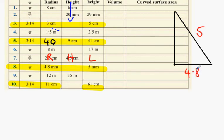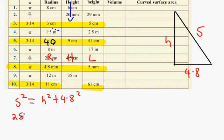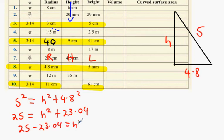Everybody keeps getting Pythagoras's theorem mixed up — it changes with every question. The longest side gets squared: 5 squared equals h squared plus 4.8 squared. That gives us 25 = h² + 23.04. So 25 minus 23.04 equals h squared, meaning 1.96 = h², and h equals the square root of 1.96, which is 1.4.